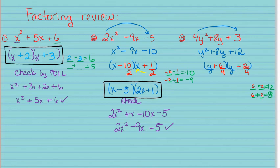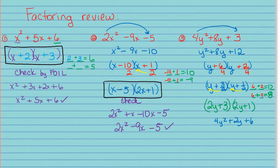Both of those give fractions, so I reduce them first: that gives y plus 3/2 and y plus 1/2. Then I apply bottoms up to both, giving 2y plus 3 and 2y plus 1. Checking: 4y squared plus 2y plus 6y plus 3 equals 4y squared plus 8y plus 3, which is what we started with, so the answer checks out.